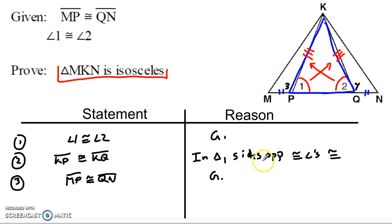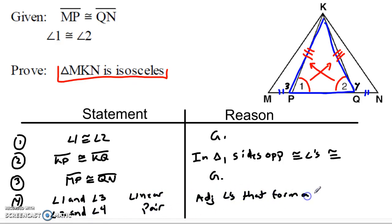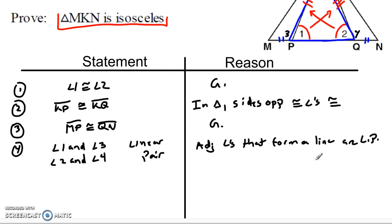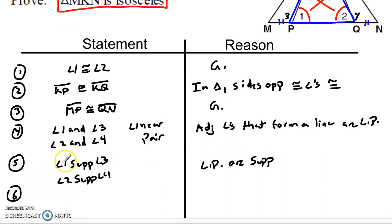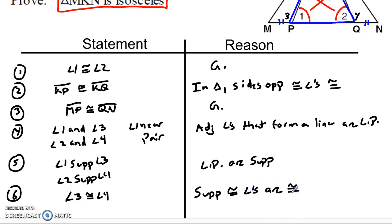Now I'm after angles 3 and 4, so this is going to be a linear pair argument. Angles 1 and 3, and angles 2 and 4, are linear pairs because adjacent angles that form a line are linear pairs. From that, angle 1 is supplementary to angle 3 and angle 2 is supplementary to angle 4, because linear pairs are supplementary. Since 1 and 2 are congruent, their supplements also have to be congruent, meaning angle 3 is congruent to angle 4 — supplements of congruent angles are congruent.